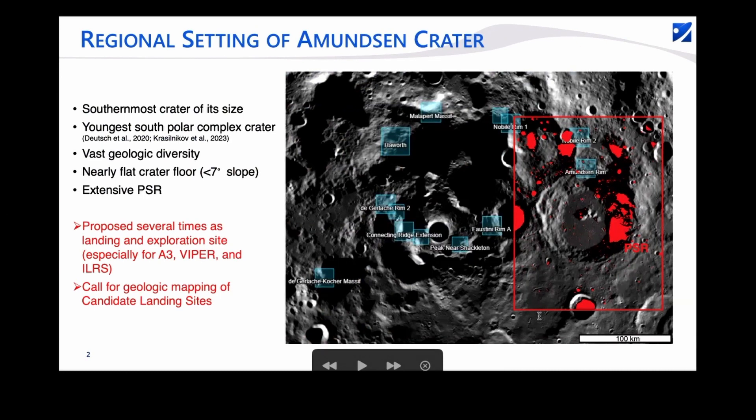This is just an overview of the entire South Polar region with Artemis, the well-known Artemis sites, and then in red, the location of the map that Lucas is doing. There's a lot of different locations where we could have started, but we selected Amundsen Crater because it's been proposed several times as a landing and exploration site. The map region includes the Amundsen Rim and the Nobile Rim, two sites for the Artemis program, and it's also been proposed as a site for the Chinese International Research Station.